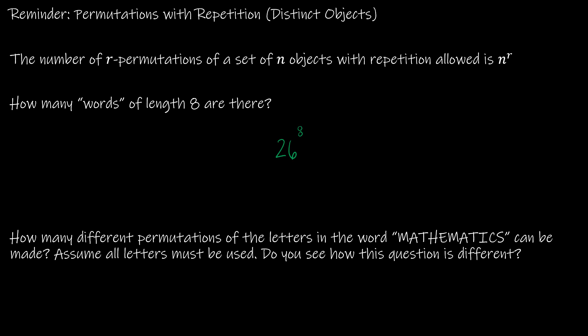Now what we're going to learn about is what if we have objects that are indistinguishable? For example, how many different permutations of the letters in the word 'mathematics' can be made, assuming all letters must be used? This is different because here we have some pairs of letters that are the same — two M's, two A's, and two T's — and that makes things more complicated.